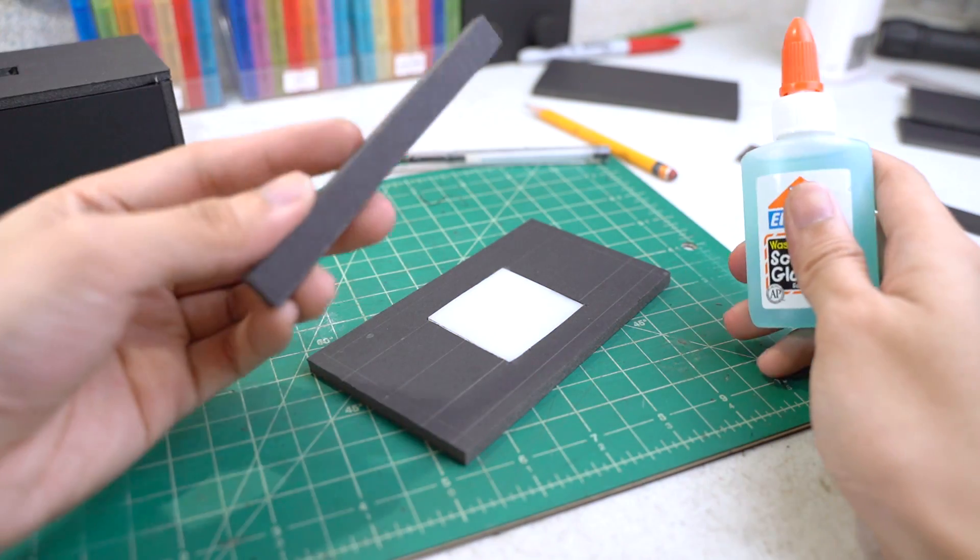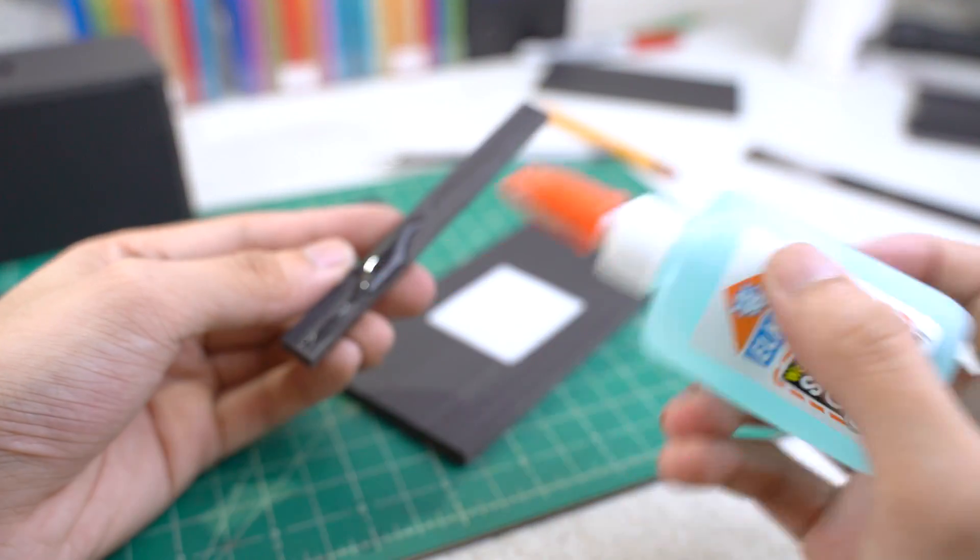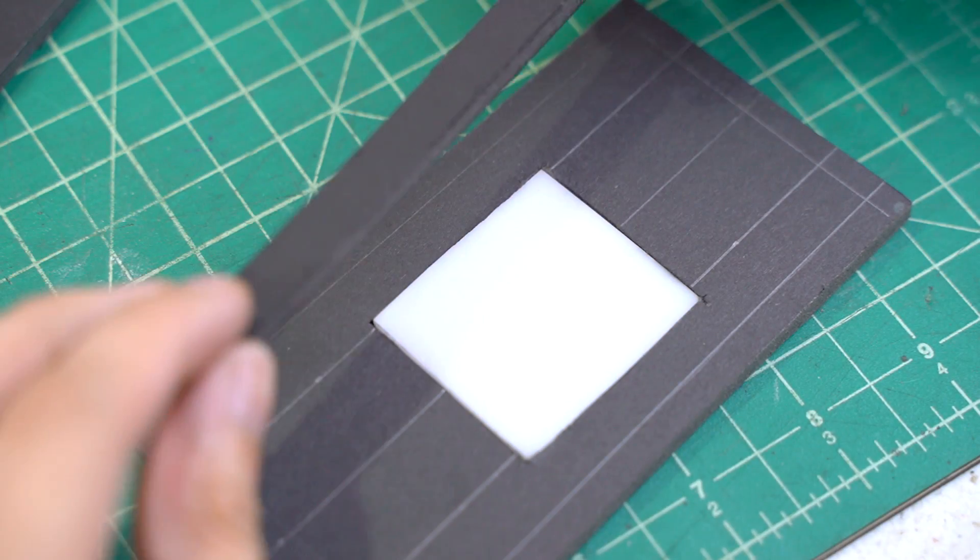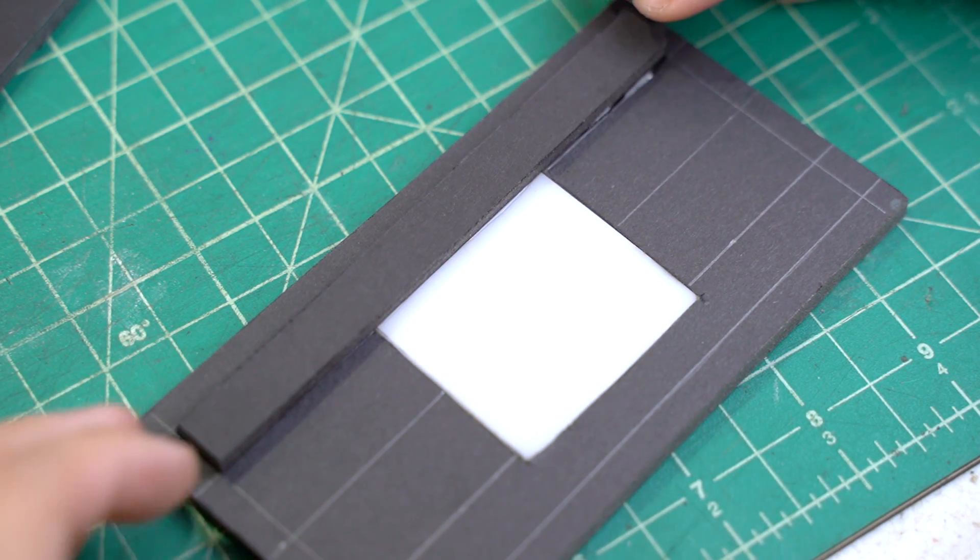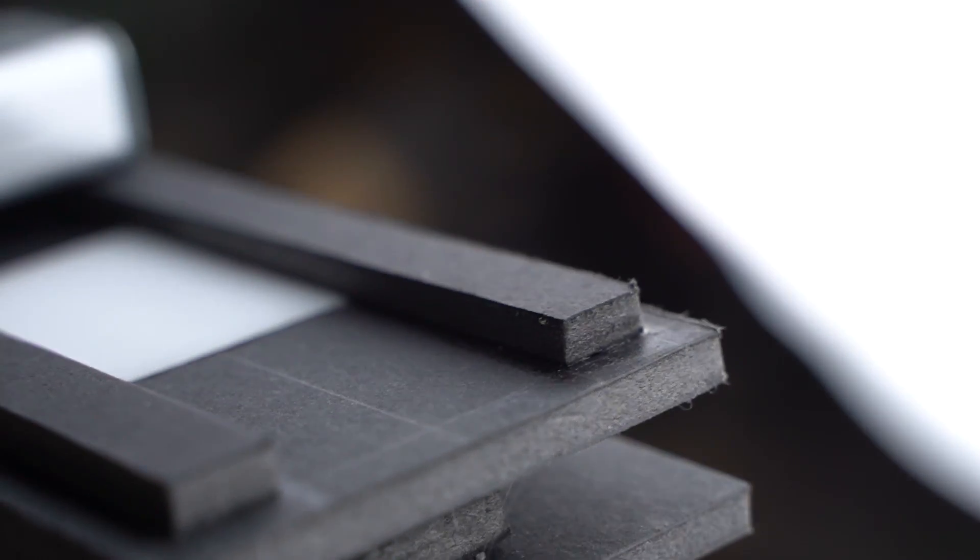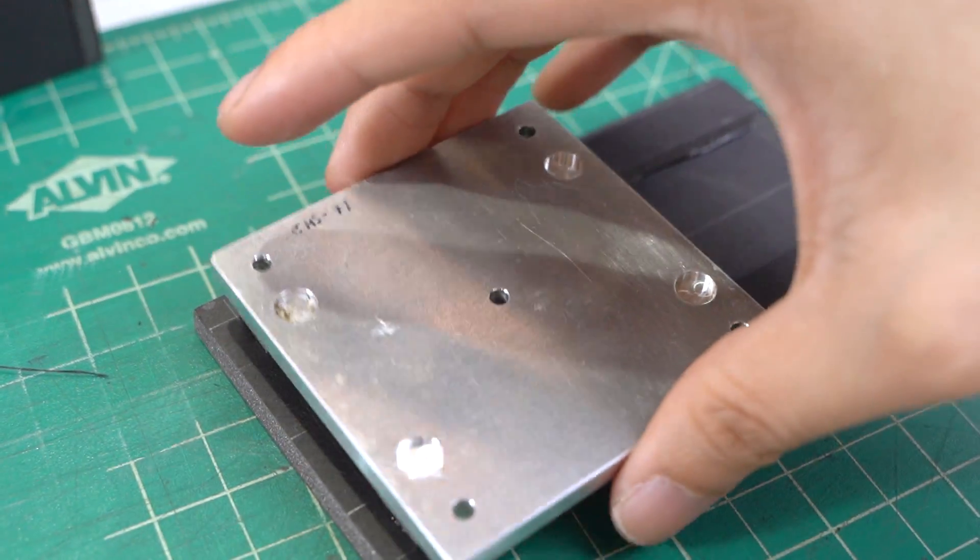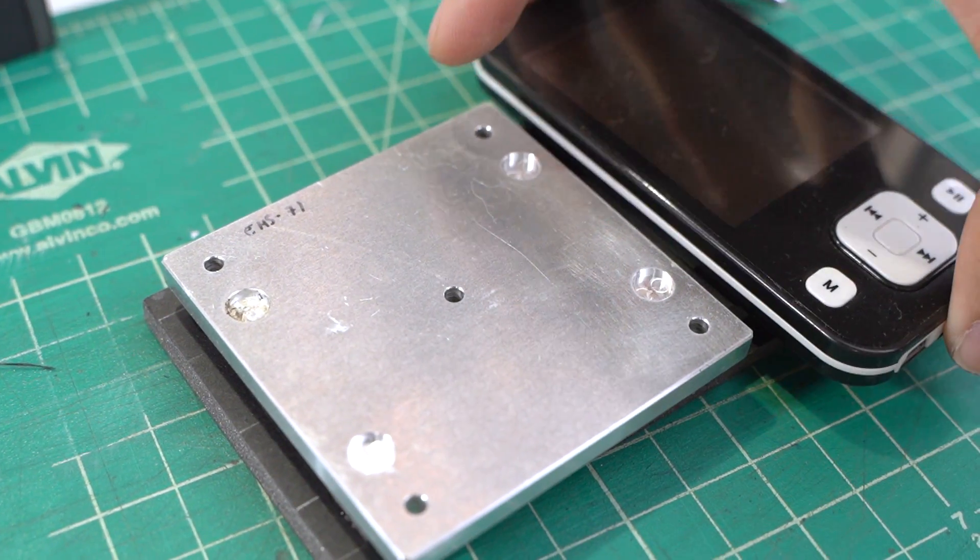I've also cut some strips of foam board as a feed guide for the film. This time I'm using Elmer's glue to hold it in place because this is a very delicate part of the project. Do the same thing for both ends. Now you have a feed guide for your film. I added some weights and let the glue dry for a few minutes.